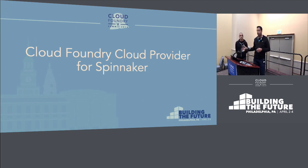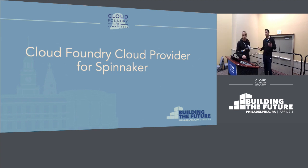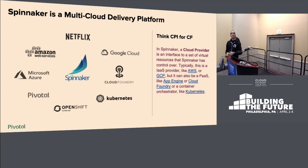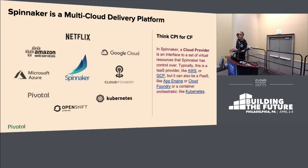I'd like to hand it over to Pasad, who's going to talk about how Spinnaker and Cloud Foundry mappings work. Spinnaker is a multi-cloud delivery platform, which means it manages resources on your behalf on IaaS such as GCP, Azure, and AWS. It also does this on platform as a service with App Engine, and we're going to be focusing on what it does with Cloud Foundry, as well as container orchestration systems such as Kubernetes.